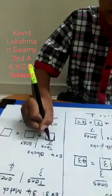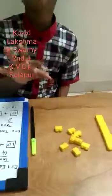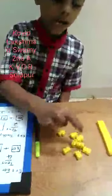2 tens. I am having 8 loose blocks. So let's count. 1, 2, 3, 4, 5, 6, 7, 8. 8 ones.